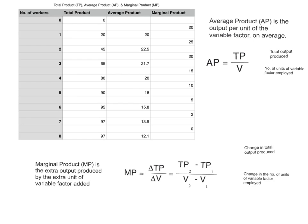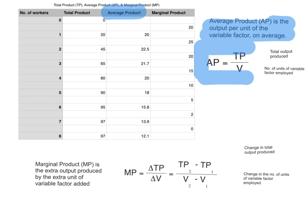From that set of data — the relationship between the number of workers and total product — you may be asked to calculate average product. Average product is the output per unit of the variable factor, on average. To calculate average product, divide total product by the number of units of the variable factor.